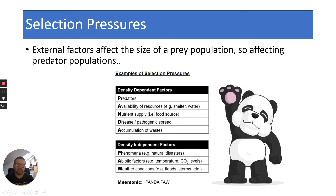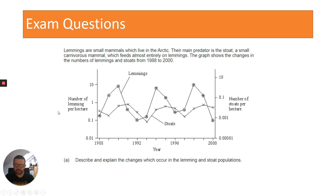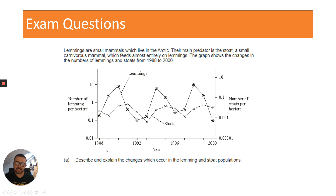Let's have a look at some exam questions. This exam question: I'd like you to have a read, pause, and see if you can answer it. It's a six-mark question. They show some information about lemmings and stoats, and discuss changes in their numbers from 1988 to 2000, with a scale on the x-axis of years. They show the number of stoats and number of lemmings per hectare, and ask you to describe and explain the changes which occur in the lemming and stoat populations.